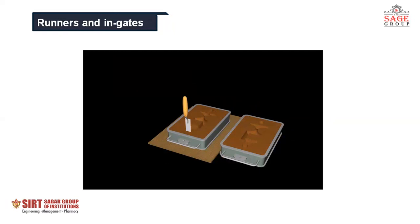For facilitating the flow of molten metal, runners and ingates are formed after ejection of the pattern, so that the metal from the sprue pin goes directly to the casting cavity through the routes of ingates and runners.